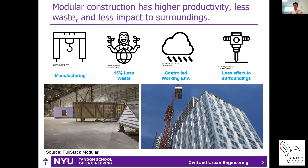Modular construction manufactures modules and panels in the factory — so-called off-site construction — which can improve productivity. It has 15% less waste compared to the conventional construction approach, is not affected by weather conditions, and has less impact on the surroundings of a construction site.